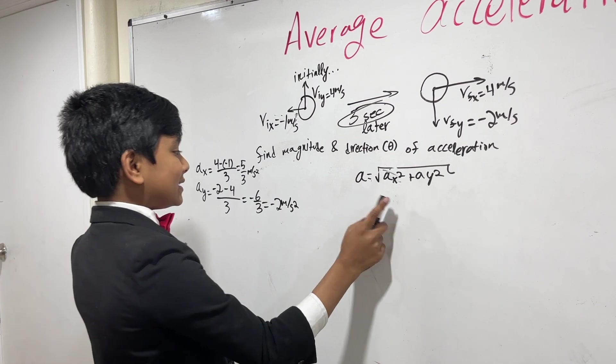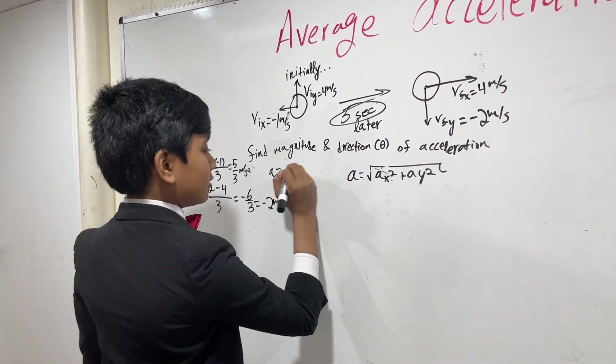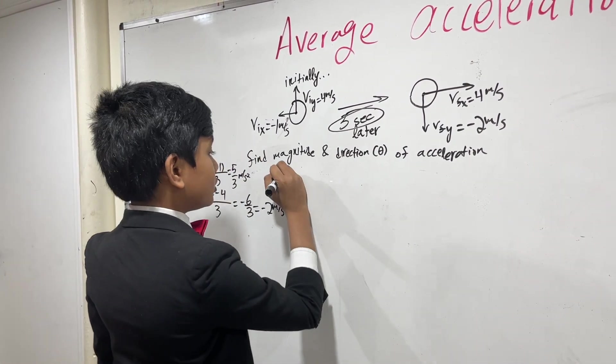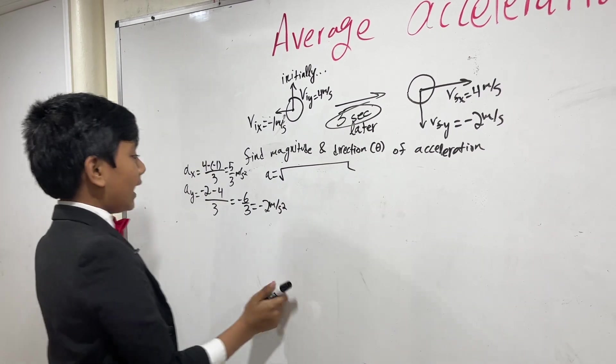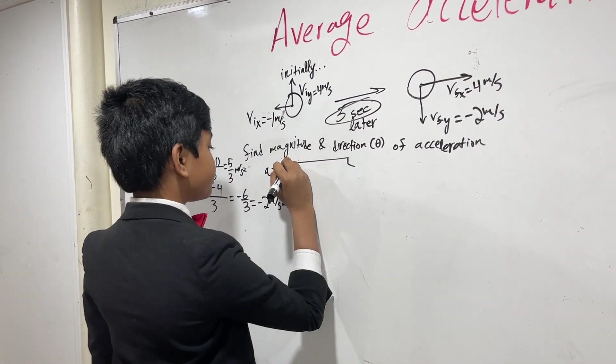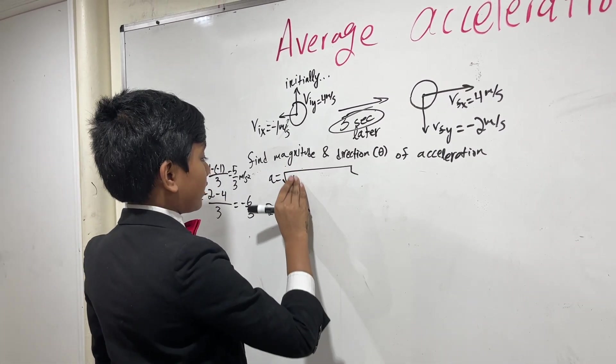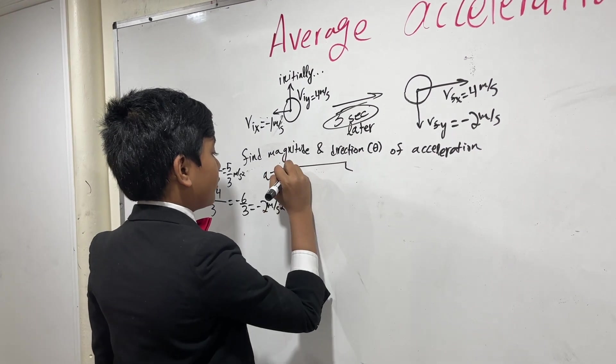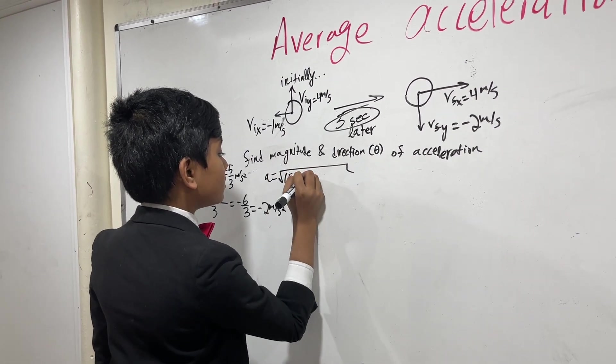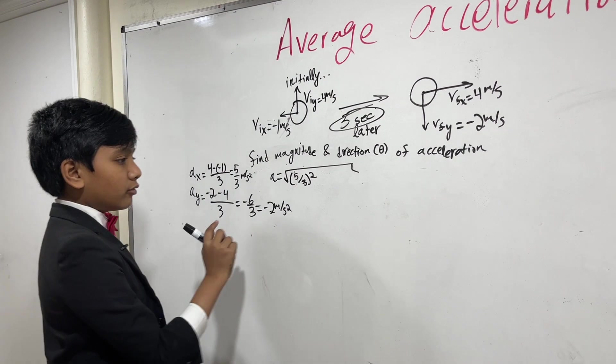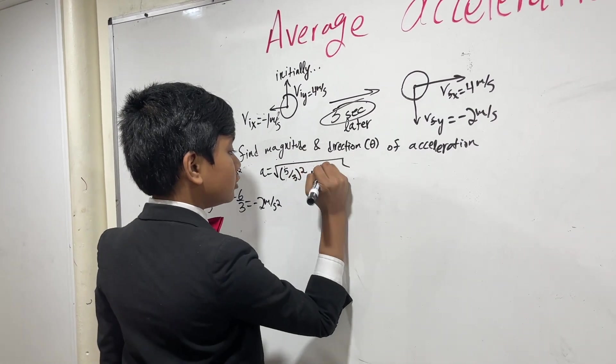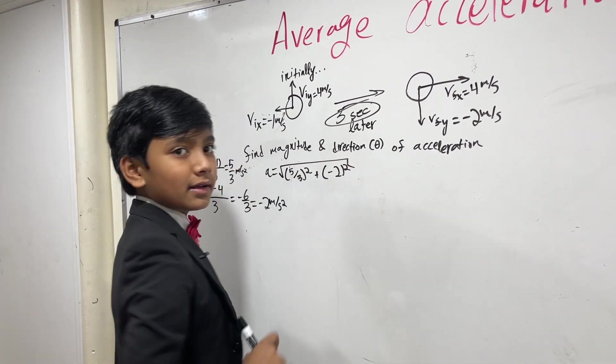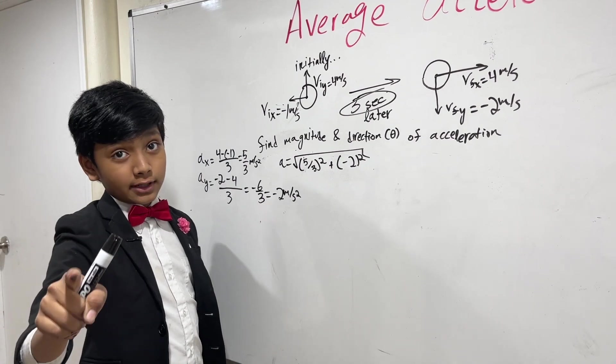Now, let's do this step. The acceleration is equal to the square root of Ax squared. Let's write that down. Is 5 over 3 squared. Then, we have Ay, which is minus 2 squared. He's about to find some way to call this racist. I'm telling you.